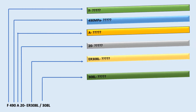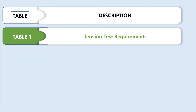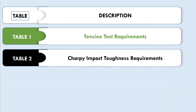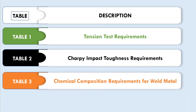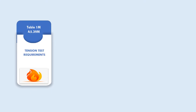By the end of this video, we'll be able to understand and decipher the designator constituting the flux-electrode classification. For understanding these designators, there are four tables given in SFA 5.39. Table 1 is about tension test requirements, Table 2 is about Charpy impact toughness requirements, Table 3 is about chemical composition requirements for weld metal, and Table 8 is about preheat, interpass temperatures, and post-weld heat treatment conditions.